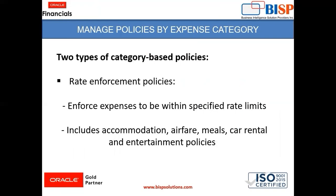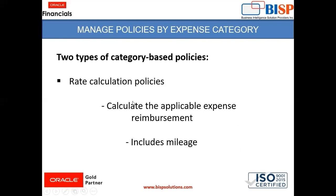There are two types of category-based policy. The first one is rate enforcement policy — it enforces expenses to be within specified rate limits and includes expense categories like accommodation, airfare, meals, car rental, and entertainment. The next type is rate calculation policy — it calculates the applicable expense reimbursement and includes expense categories like mileage.